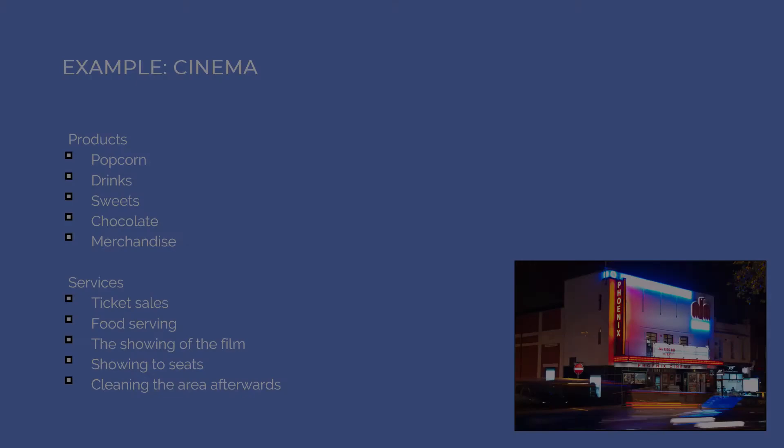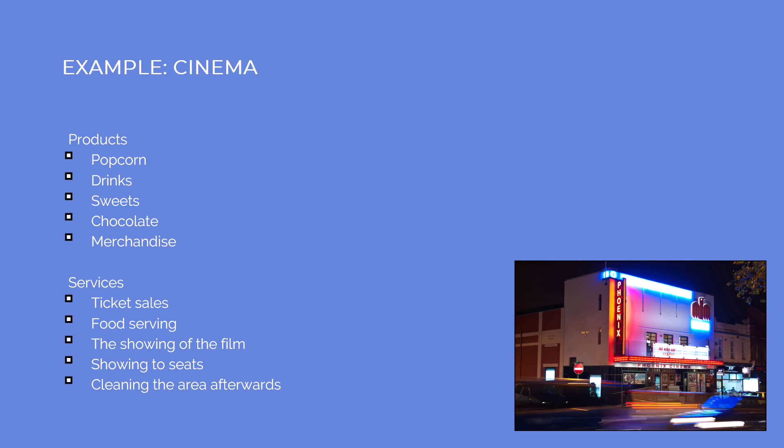We're going to look at a couple of examples. In a cinema, the products that you can buy are things like popcorn, drinks, sweets, chocolate, and merchandise — by merchandise we mean things like t-shirts and caps that they sometimes sell with a big film release. Services are things like ticket sales, food serving, showing of the actual film, showing you to your seats, and cleaning the area afterwards.